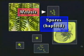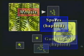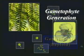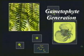The spores grow into tiny haploid fern plants called gametophytes, or the gametophyte generation, that don't look like the sporophyte fern at all.